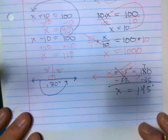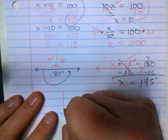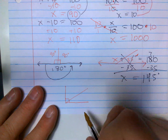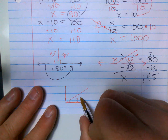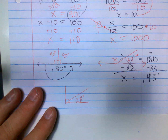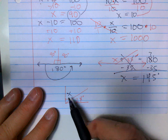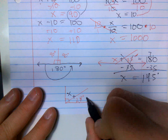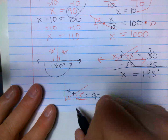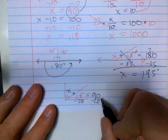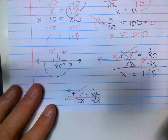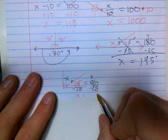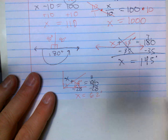It works the same way if you have a 90-degree angle — say this is 28 degrees. X over here plus that has to equal 90. So X plus 28 equals 90. I need to subtract 28 from both sides, borrow from the nine — this crosses out. X equals 90 minus 28, which is 62 degrees.